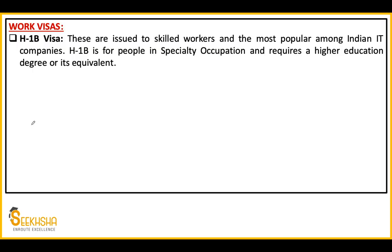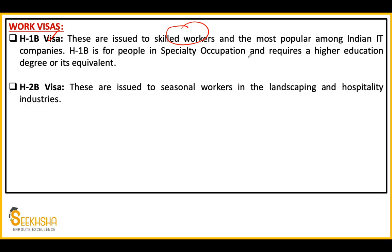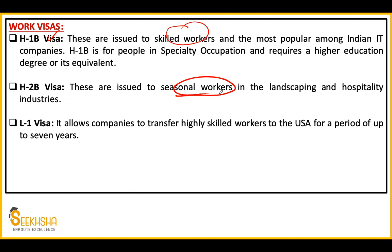Let's look at the different types of visas. H-1B visa is given to skilled workers in speciality occupations — highly skilled workers and higher education degree holders. It is the most popular. H-2B visas are issued to seasonal workers in the landscaping and hospitality industries. L-1 visa is issued to companies who want to transfer workers to the USA, for a period of up to 7 years. H-4 visa is for dependents of H-1B holders — aged parents or kids. J-1 visa is for students who go to work-study summer programs in the USA.